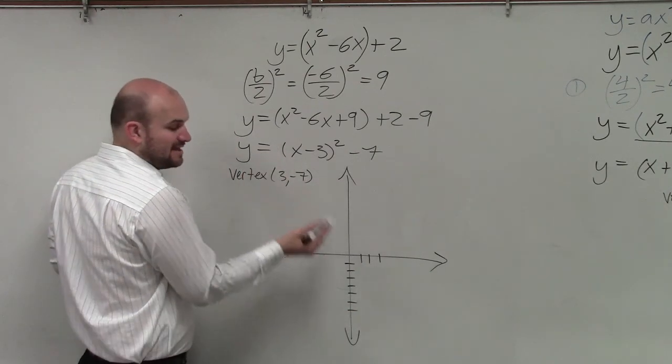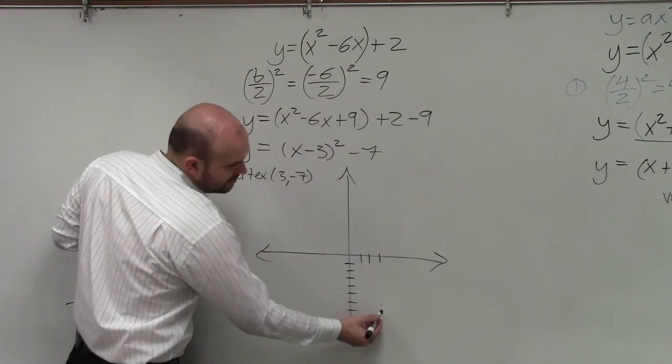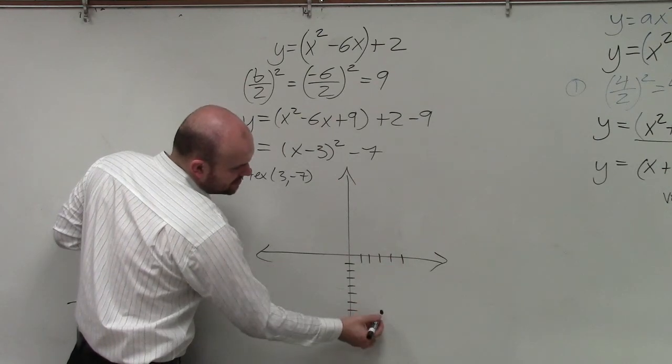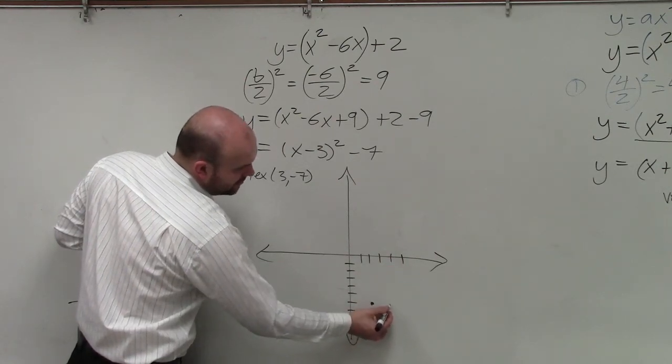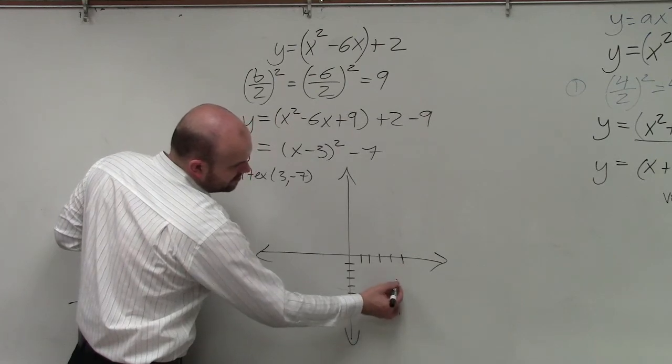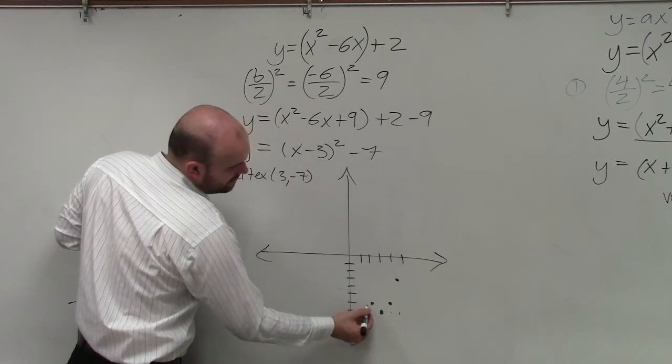You guys can see that my a is equal to 1. So I'm just going to go over 1, up 1, over 1, up 1, over 2, up 4, over 2, up 4.